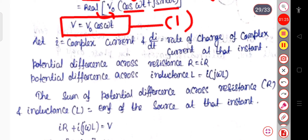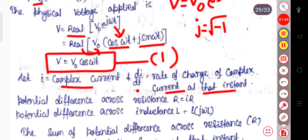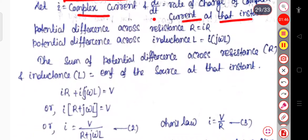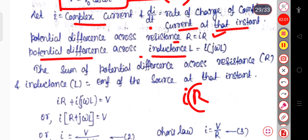Let i be the complex current and di/dt be the rate of change of this complex current at that instant. The circuit contains both the resistor and the inductor. The potential difference across the resistor will be equal to iR, according to Ohm's law. The potential difference across the inductor — in place of R we write jωL, so the potential difference across the inductance will be equal to i times jωL.